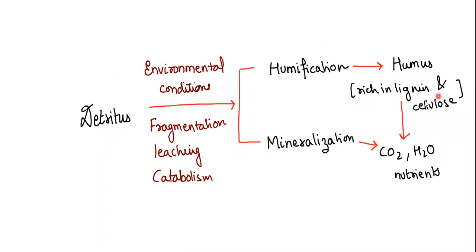In case of humification it will lead to formation of humus which is rich in lignin and cellulose, that's why it is resistant to microbial degradation and it will slow down the decomposition process. In case of mineralization it will be converting into inorganic nutrients which are generally carbon dioxide, water and some other nutrients.